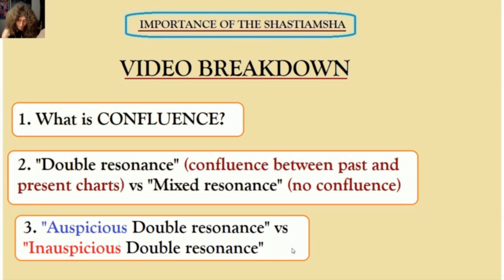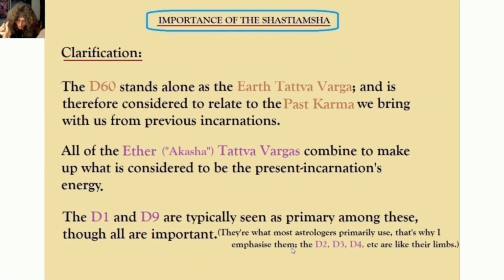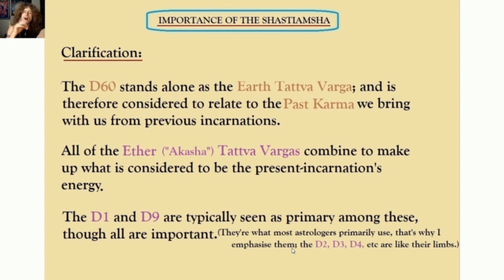The D60 is the Earth Tatva Varga, relating to the past karma we bring from previous incarnations. All of the Ether Tatva Vargas — the D1, D2, D3, etc. — combine to make up the Indriyas, the present incarnation's energy. I emphasize the D1 and D9, as most astrologers do. The D2, D3, D4, etc. are like the limbs of these more primary charts. Sometimes it happens that a person's present karma is cast from the same groove as the ancestral energy of the D60 — this is what we're starting to talk about with the concept of double resonance.